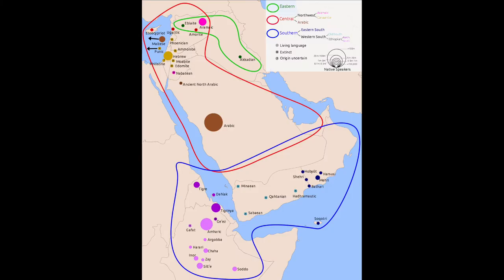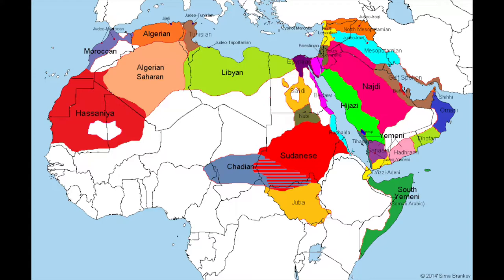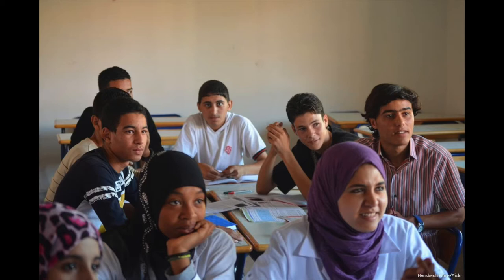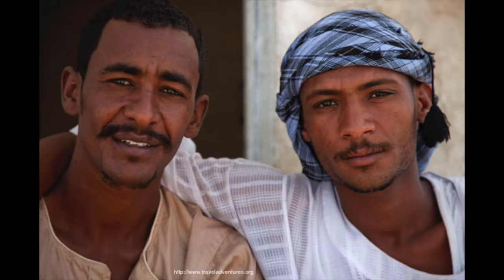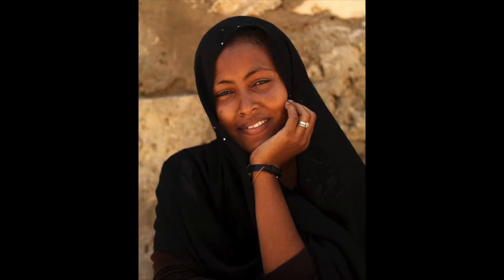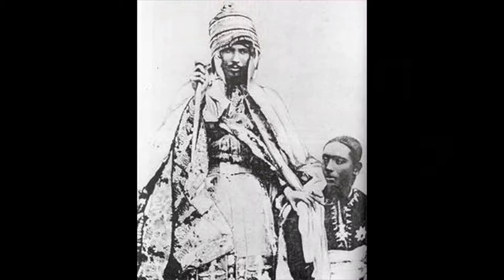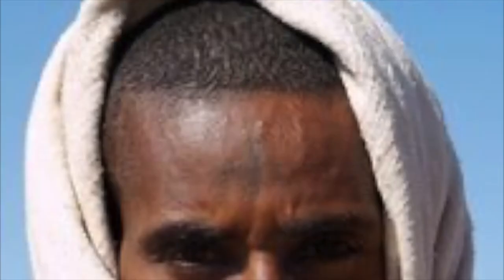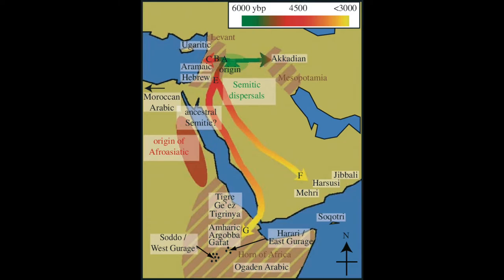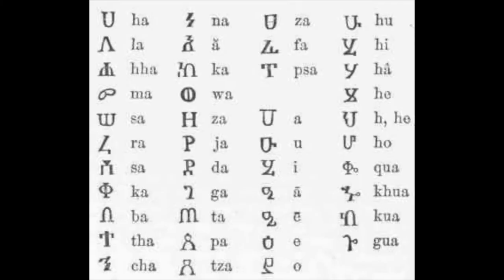The first branch is the Semitic branch, which is the biggest, originating from the Middle East and Ethiopia. The spread of Arabic brought it to most of Northern Africa, including Morocco, Algeria, Tunisia, Mauritania, Northern Mali, parts of Niger, Libya, Chad, Egypt, Sudan, Eritrea, Djibouti, and also small parts of Nigeria, Cameroon, the Central African Republic, South Sudan, and Somalia. Arabic is the biggest language of this family, with around 300 million speakers. Other significant Semitic languages are Amharic of Ethiopia with around 25 million speakers, and Hebrew with around 9 million speakers.